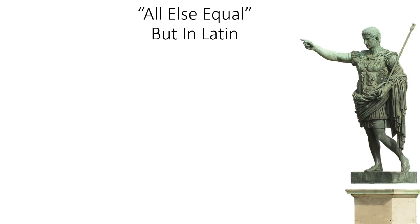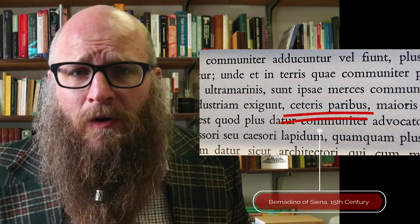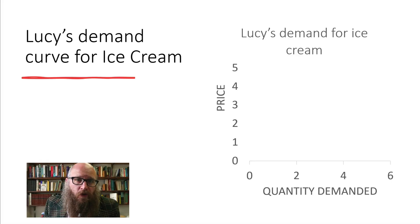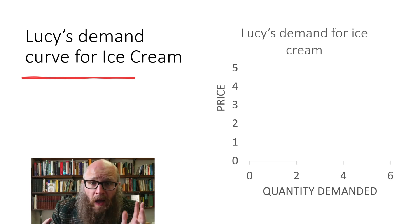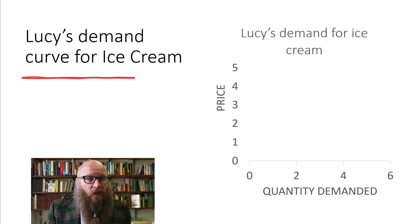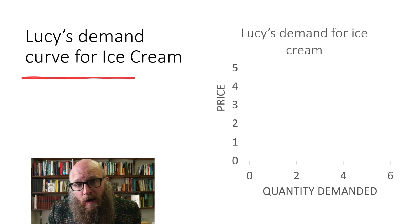We even have a word for this in Latin — holding all else equal is ceteris paribus. You might hear some economists slip ceteris paribus in from time to time. So let's put her demand schedule on a picture. When we look at a graph, the first thing we do is identify the axes. On the vertical axis, we have the price of ice cream. And on the horizontal axis, we have quantity demanded — the number of scoops that Lucy is willing to buy for any given price.